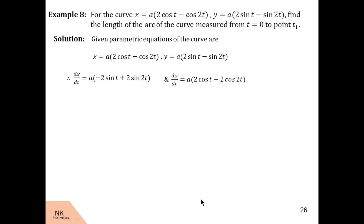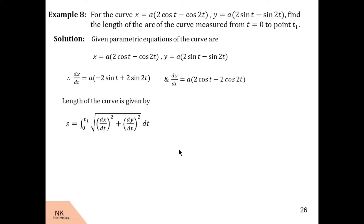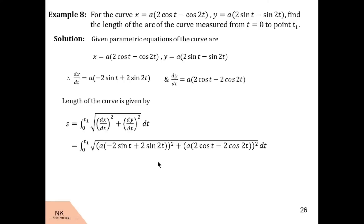We assume s is the required length of the curve from t = 0 to t1. Then s is given by the integral of the square root of (dx/dt)² + (dy/dt)² dt over the limit 0 to t1. Now let us substitute the values of dx/dt and dy/dt.